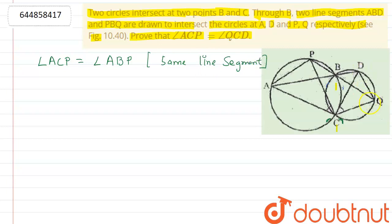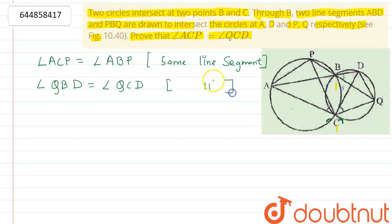Now, QD is a line segment, and angle QCD and angle QBD are lying on the same line segment. So we say that angle QBD is equal to angle QCD — same line segment.